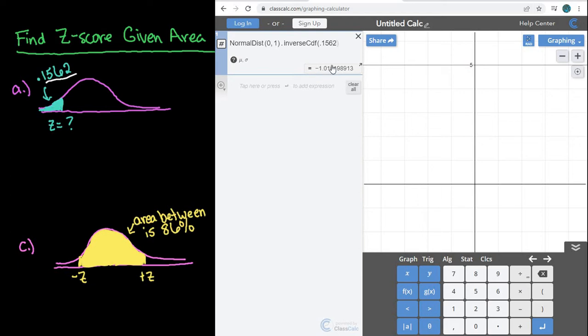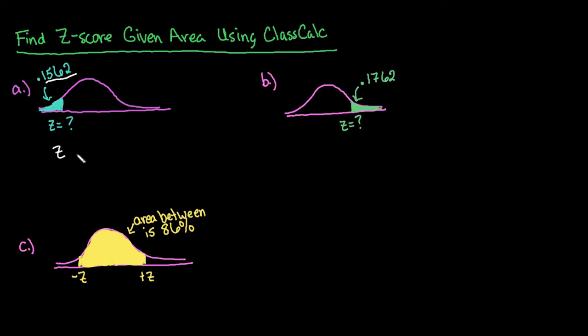I can just type in the 0.1562 as it is, and it gives you your z-score right here. Typically we round to two decimal places. You can sometimes round to three, but by default, the z-score we round to two decimal places. So I'm just going to write that down, that my z-score that corresponds to an area to the left of 0.1562 is negative 1.01.